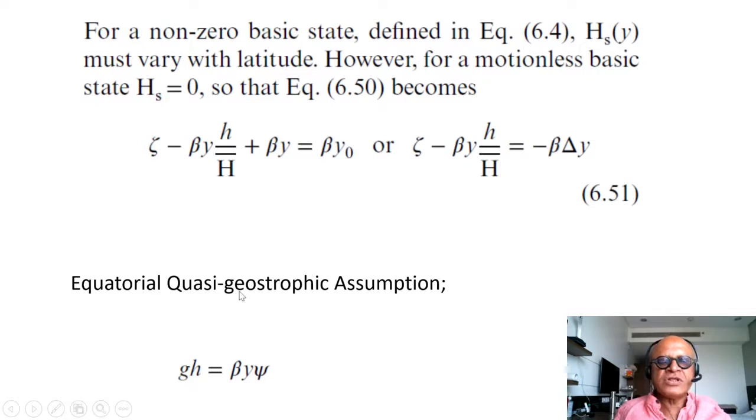You can make equatorial quasi-geostrophic assumption, which is actually not critical, which means there is a stream function, non-divergent flow, etc., which I hope you can catch up with the basics of geostrophy. The stream function basically means the flow is tangential to the streamlines. So you can write the geopotential in terms of this stream function.